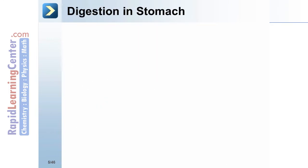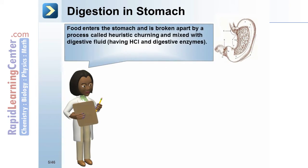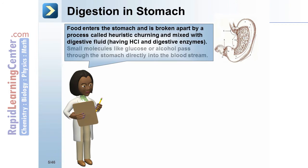Digestion in the stomach: food enters the stomach and is broken apart by a process called mechanical churning and mixed with digestive fluids containing HCL and digestive enzymes. Small molecules like glucose or alcohol pass through the stomach directly into the bloodstream.